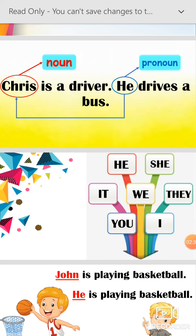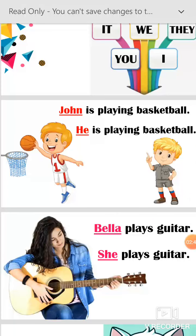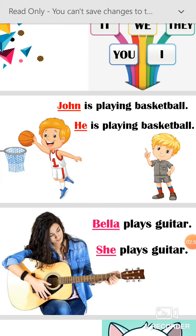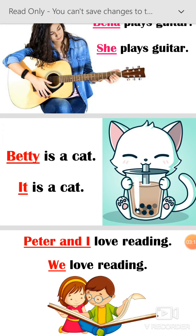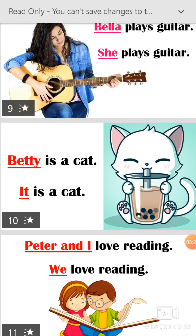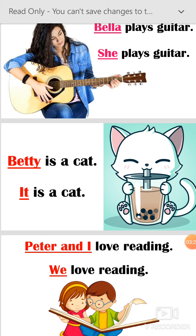The words in the category of subject pronouns are: he, she, it, we, they, you, I — all of these are subject pronouns. Now look at examples. 'John is playing basketball' — John is performing an action, so 'he' is the subject pronoun. 'Bella plays guitar' — Bella is a girl, so 'she plays guitar.' 'Betty is a cat' — 'it' is used for a singular animal or singular thing, so 'it' is the subject pronoun here.